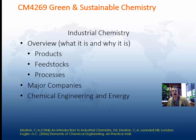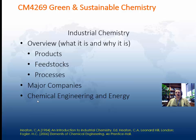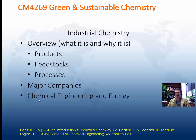Hi guys. Welcome to module CM4269, Green and Sustainable Chemistry. This is the start of the unit Industrial Chemistry. Why are we thinking about Industrial Chemistry in a Green Chemistry module? Basically it's the context for our subject. If Green Chemistry is about avoiding environmental impacts from the manufacture of chemicals and making of things, then clearly the chemical industry is where we will start.